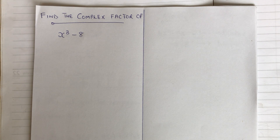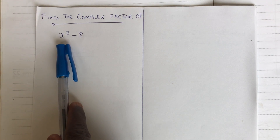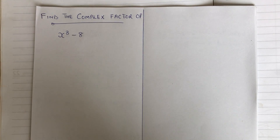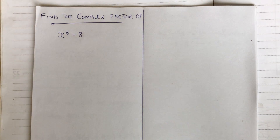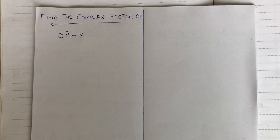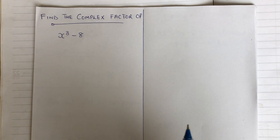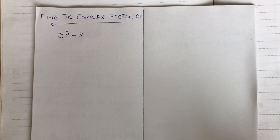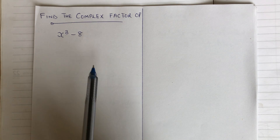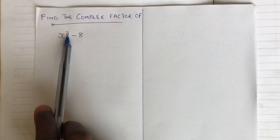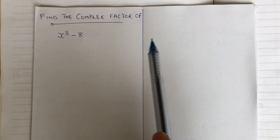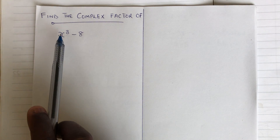We have an equation here: x cubed minus 8. We are supposed to find the complex factors of this polynomial function. In my previous video, I was talking about how to find the factors or the roots of a quadratic equation using the quadratic formula. All the examples I took were polynomials having a square degree. For those, we can just use the quadratic equation to find the complex roots. But here we have a third degree, and the other degrees are missing, which are zero. So we can't just use the quadratic formula to solve this.